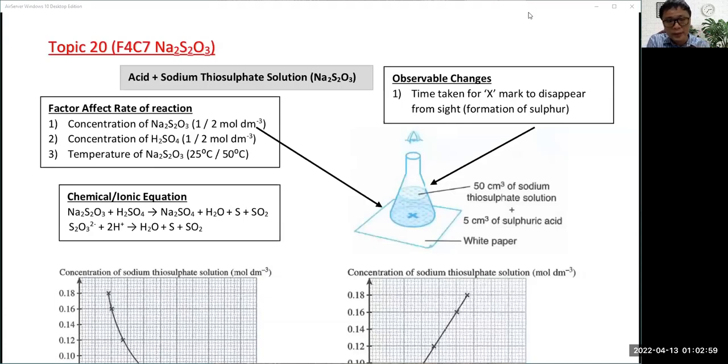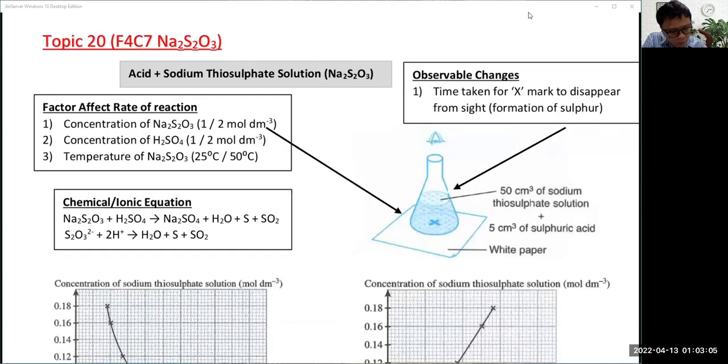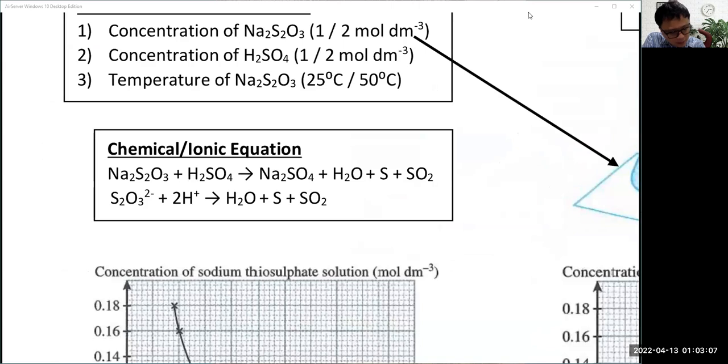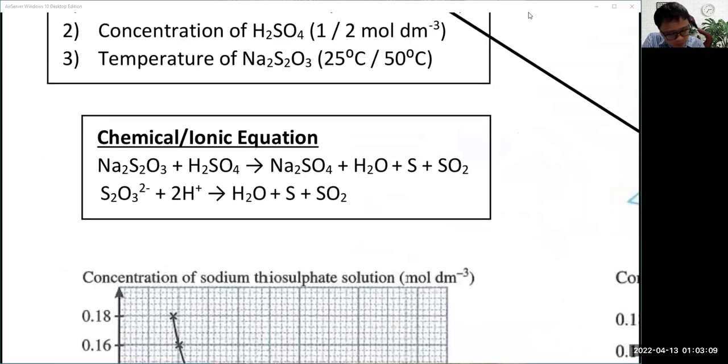Okay, now we learn about topic 20, sodium thiosulfate. The idea is this: this reaction will be able to produce sulfur.